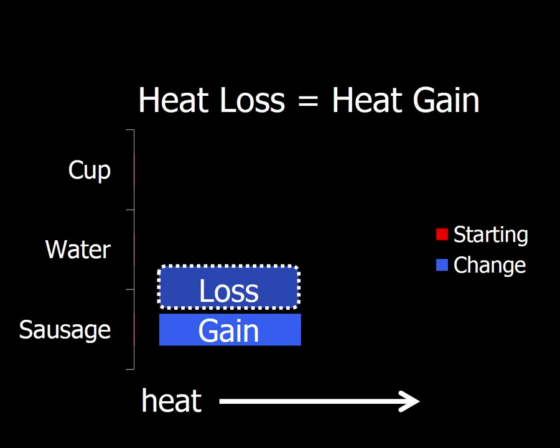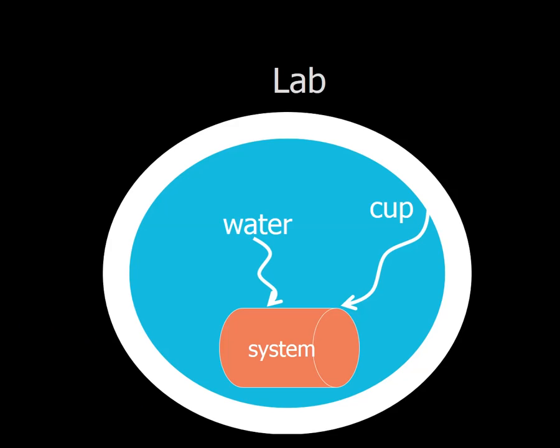So heat loss equals heat gain. So let's say that the water loses 800 joules, shown as negative 800 J. And then let's say the cup loses 50 joules of heat. We're going to make the assumption that total, that's 850 joules of heat lost.